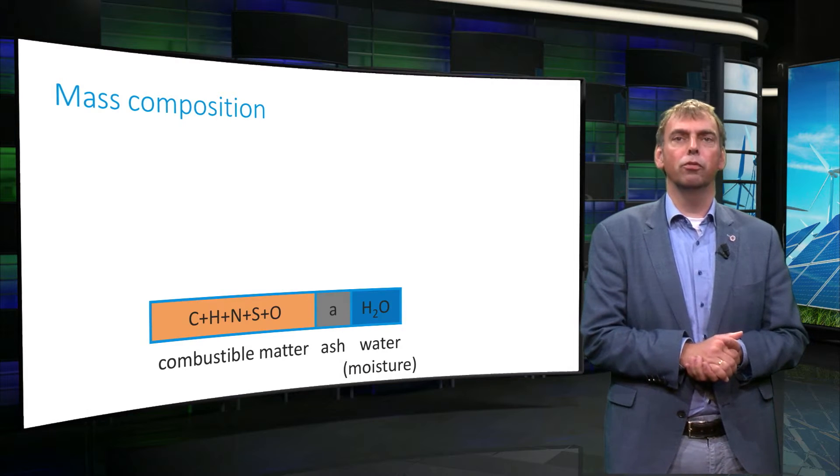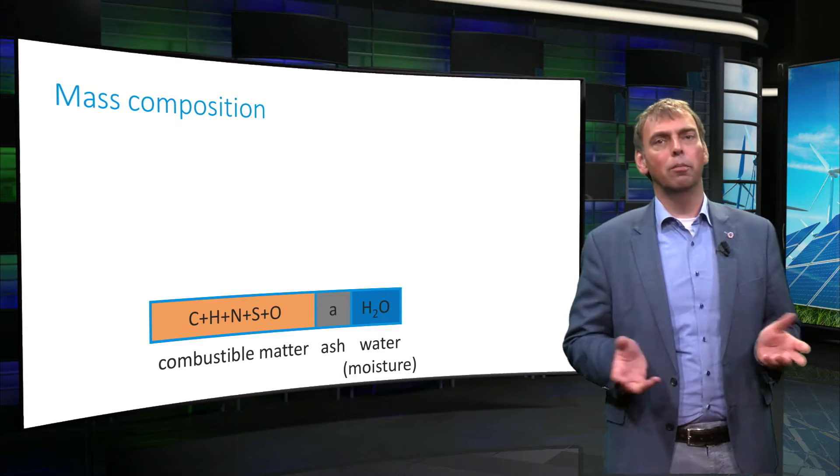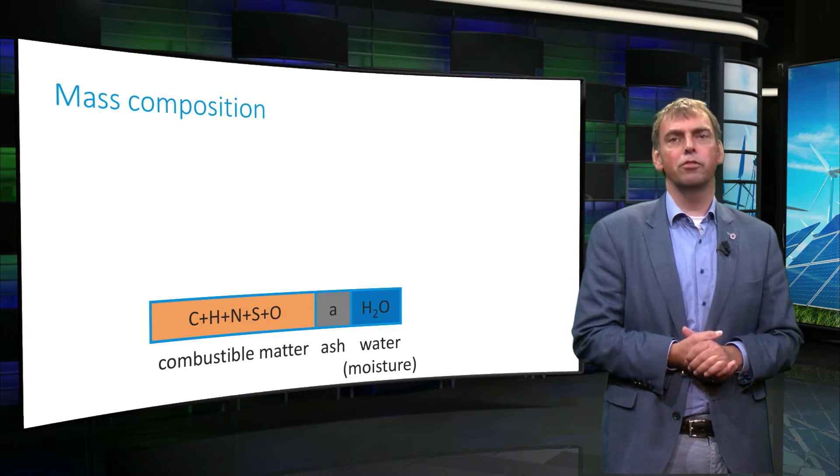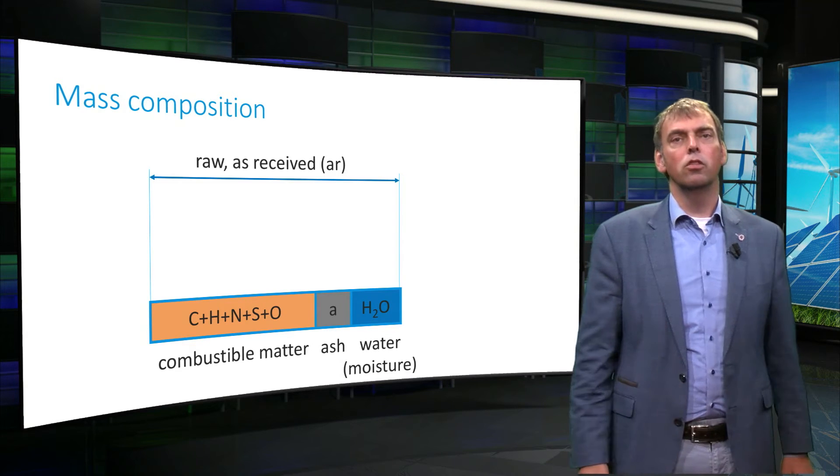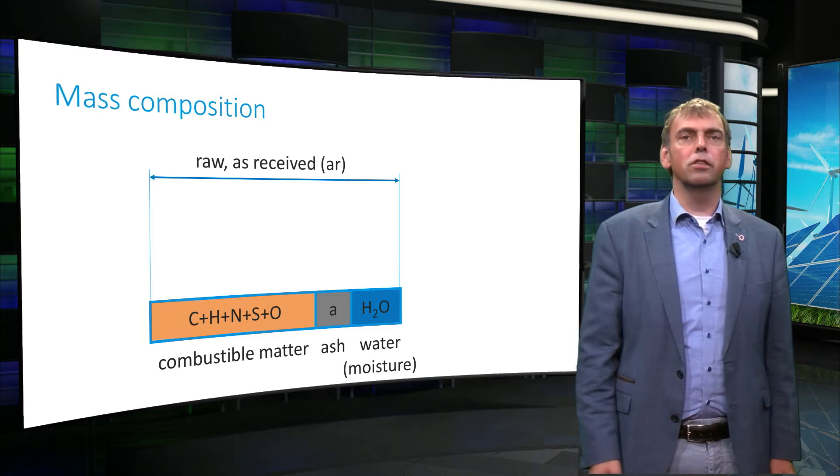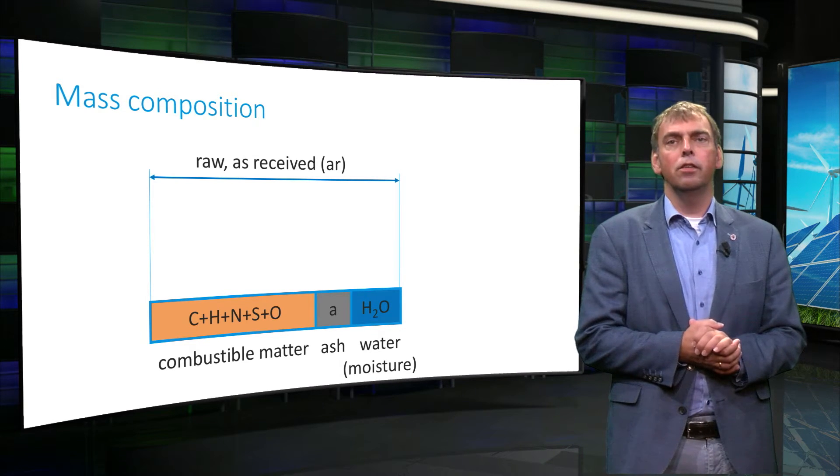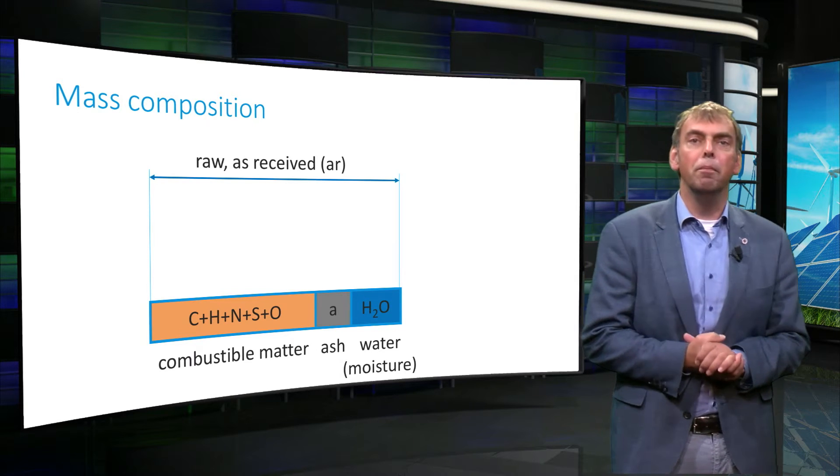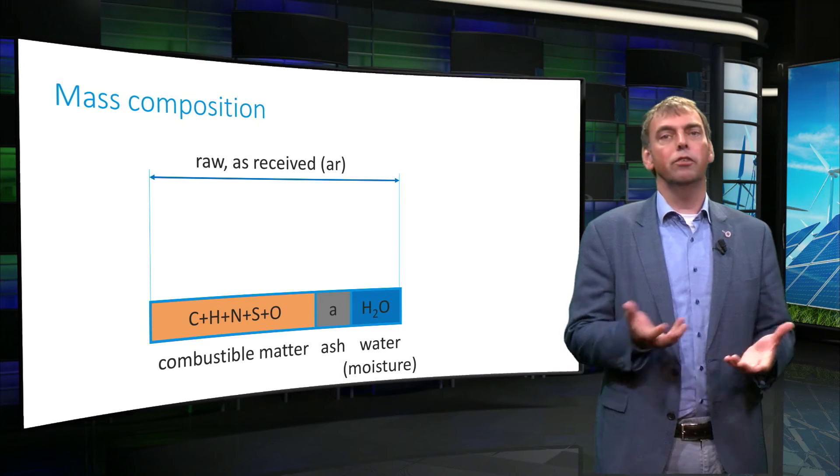The composition of solid fuels, and thus also biomass, after analysis in a laboratory can be given on different bases, mostly presented in mass percentages. The first fuel composition basis is the as-received composition, abbreviated as AR. This means that the fuel is considered with all its constituents.